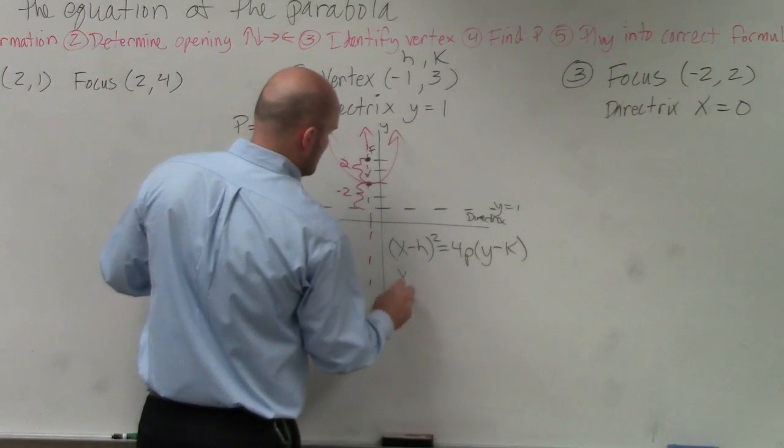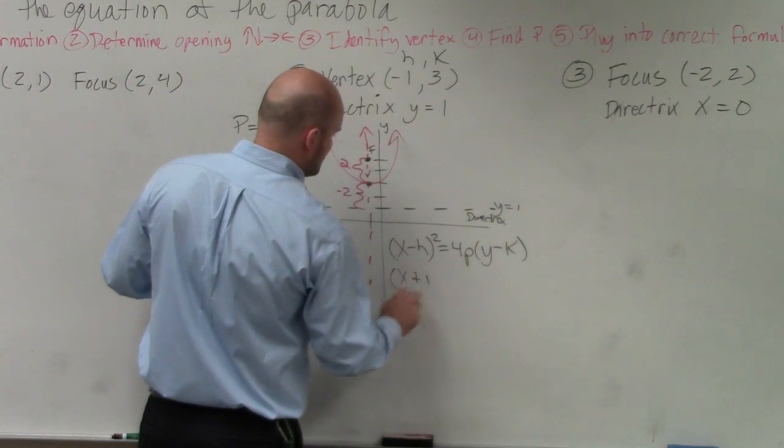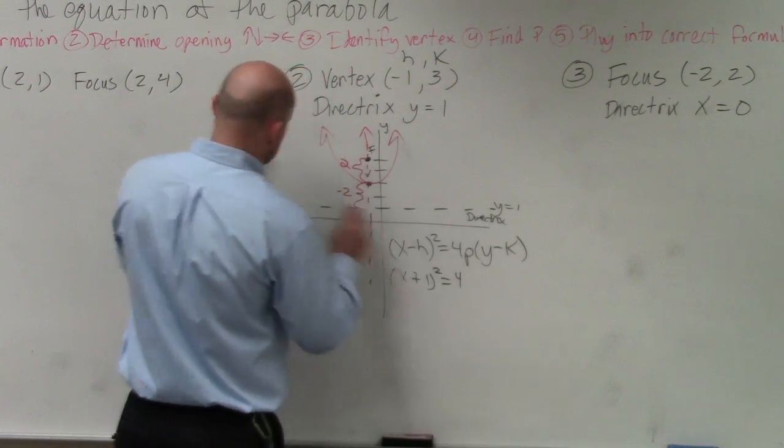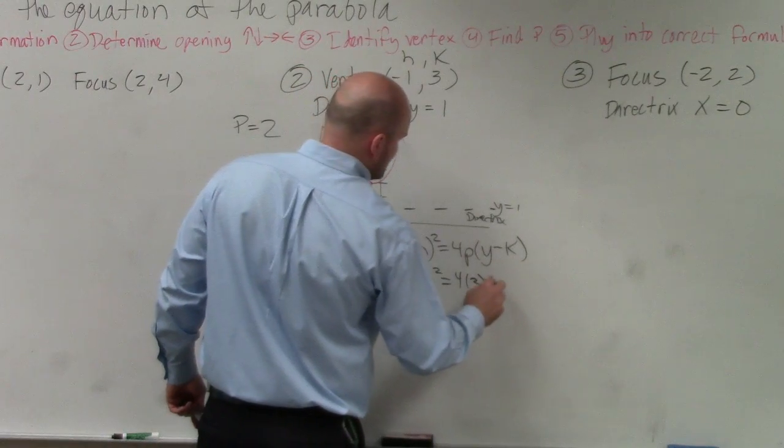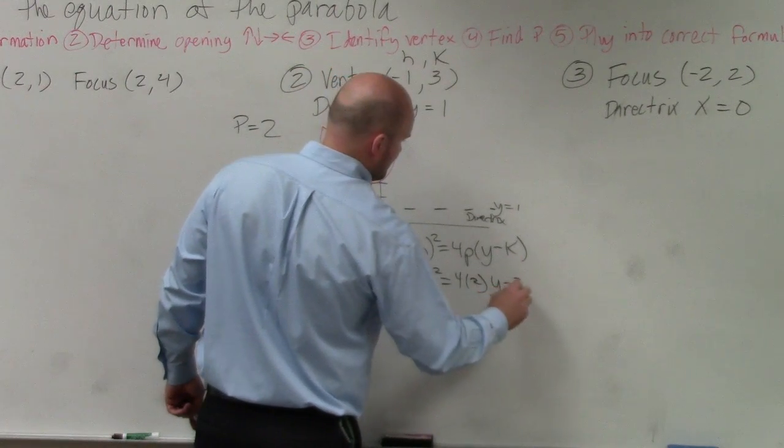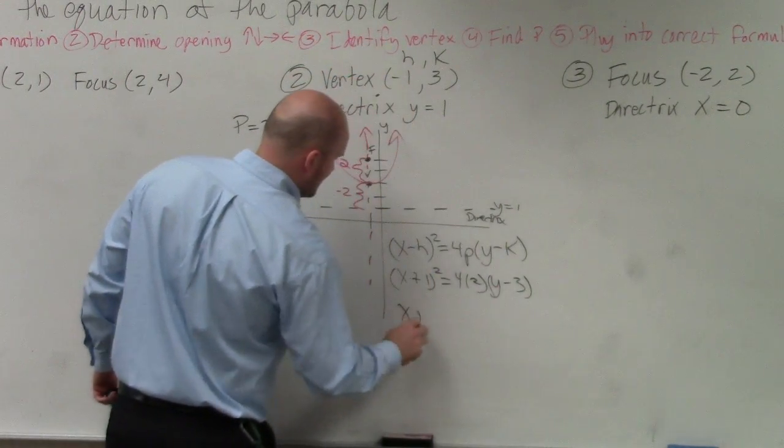Well, I already know what h is, which is minus 1. So that's going to be x plus 1 squared equals 4 times p, which is 2, times y minus 3. So my final answer.